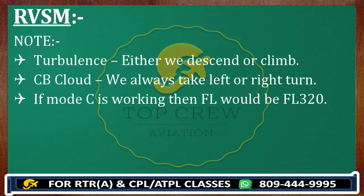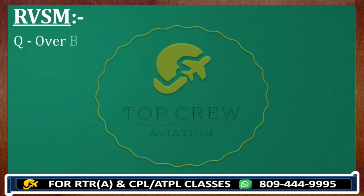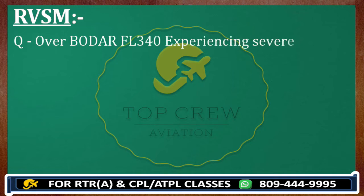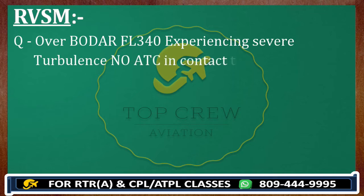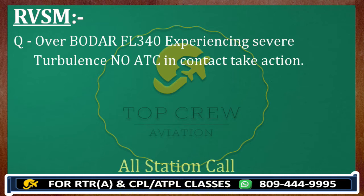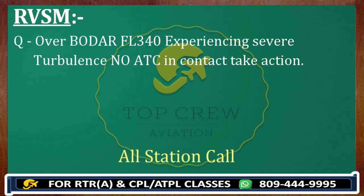The next situation: overbought at flight level 340, experiencing severe turbulence, no contact with ATC — take action. Whenever there is no contact with ATC, the best thing is you need not find any ATC on the chart — you always give the all-station call. Wherever severe turbulence comes, pan-pan will come into the picture.